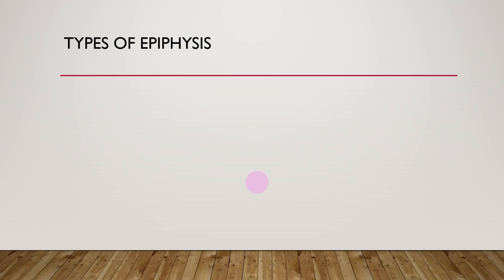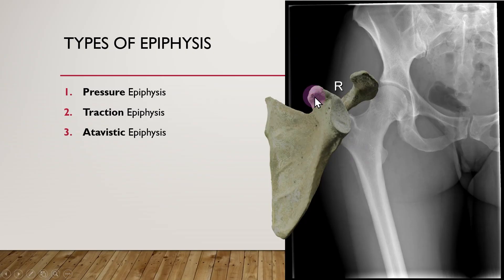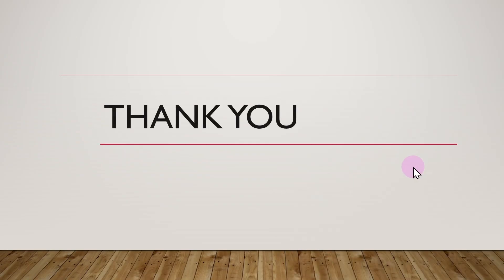Let us summarize. There are four types of epiphyses: pressure epiphyses — exemplified by the femoral head; traction epiphyses — such as the greater and lesser trochanters; atavistic epiphyses — the classic example being the coracoid process; and aberrant epiphyses — which can occasionally be found at the base of the second to fourth metacarpals, also known as pseudo-epiphyses. Thank you so much for your patient listening.